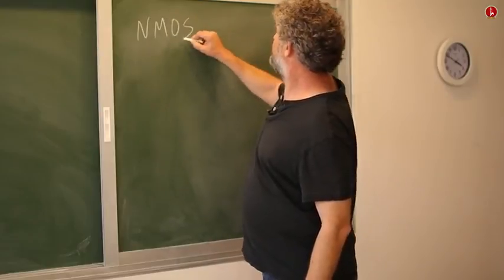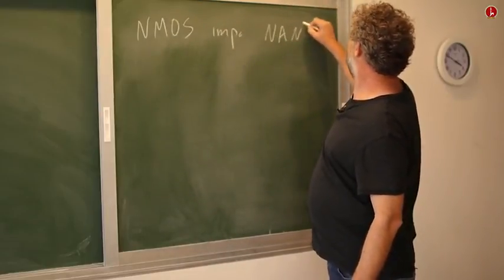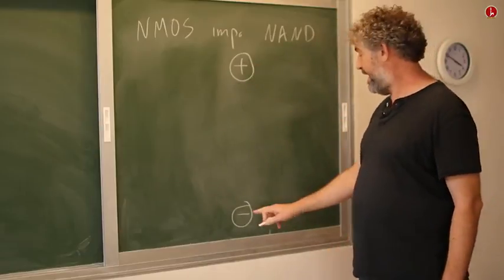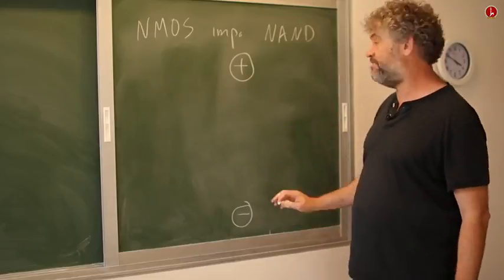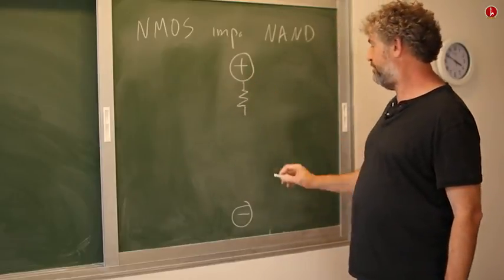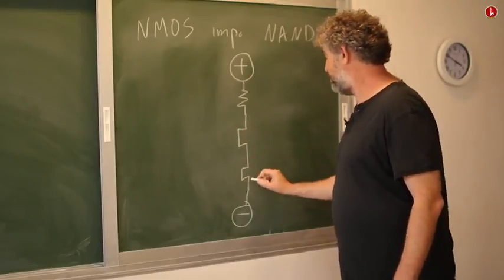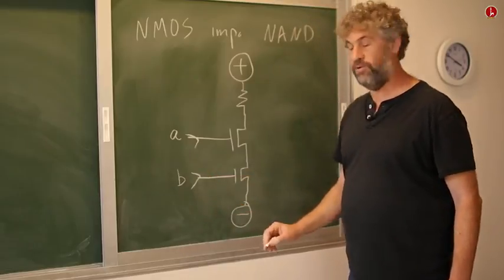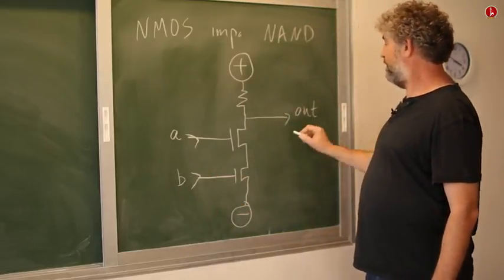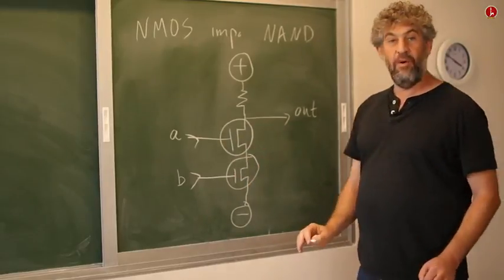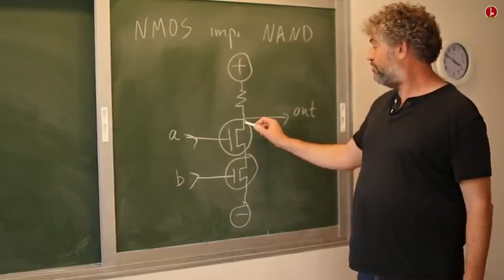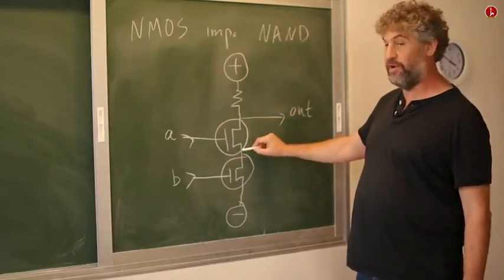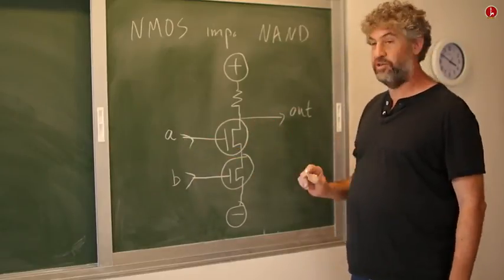Here is an NMOS implementation of a NAND gate. We have a plus voltage, which is going to be our logical one, and a minus voltage, which is our logical zero. We connect them as follows: a little resistor here, which is a weak connection, and then two NMOS transistors connected this way. This is going to be our A input, this is going to be our B input, and this is going to be our output. The basic functionality of one of these NMOS transistors is that whenever the input gate gets high voltage, it connects the two other terminals. If it gets a negative voltage, it disconnects the two terminals.